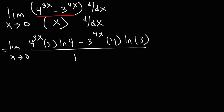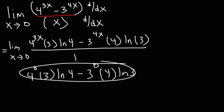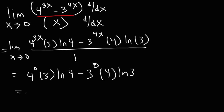Replacing x with 0, we're going to have 4 raised to the 0 power times 3 times ln 4, minus 3 raised to the 0 power times 4 times ln 3, divided by 1. 4 to the 0 power is 1, leaving behind 3 ln 4. And 3 to the 0 power is 1, so we get 4 ln 3. The answer is 3 ln 4 minus 4 ln 3.